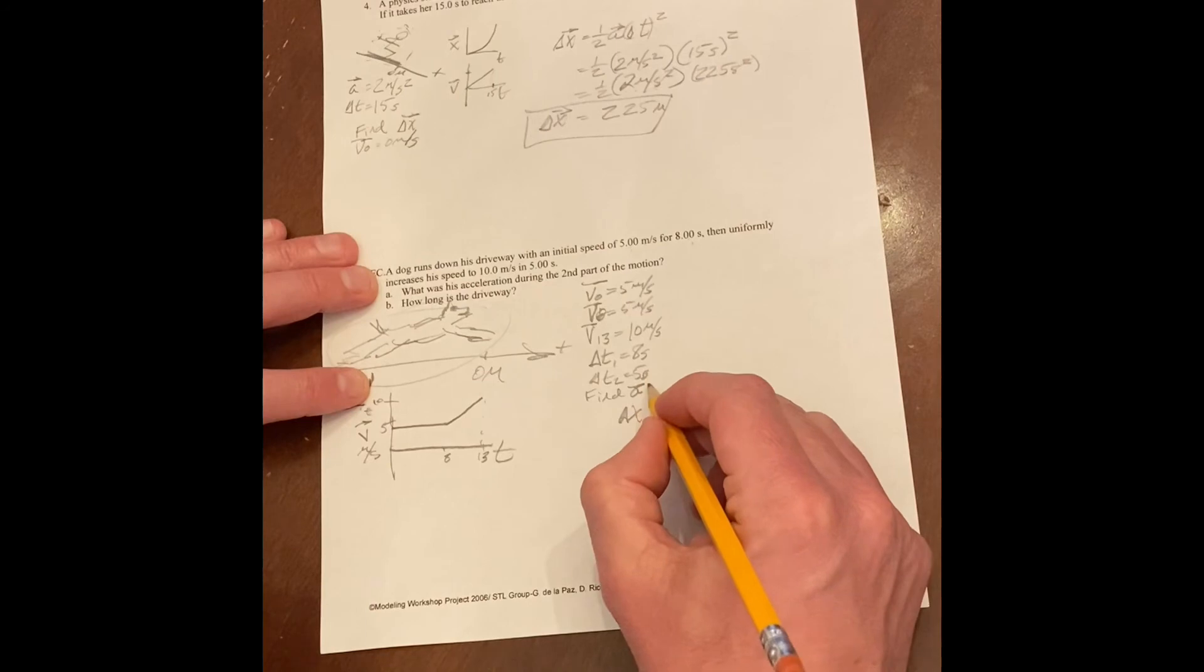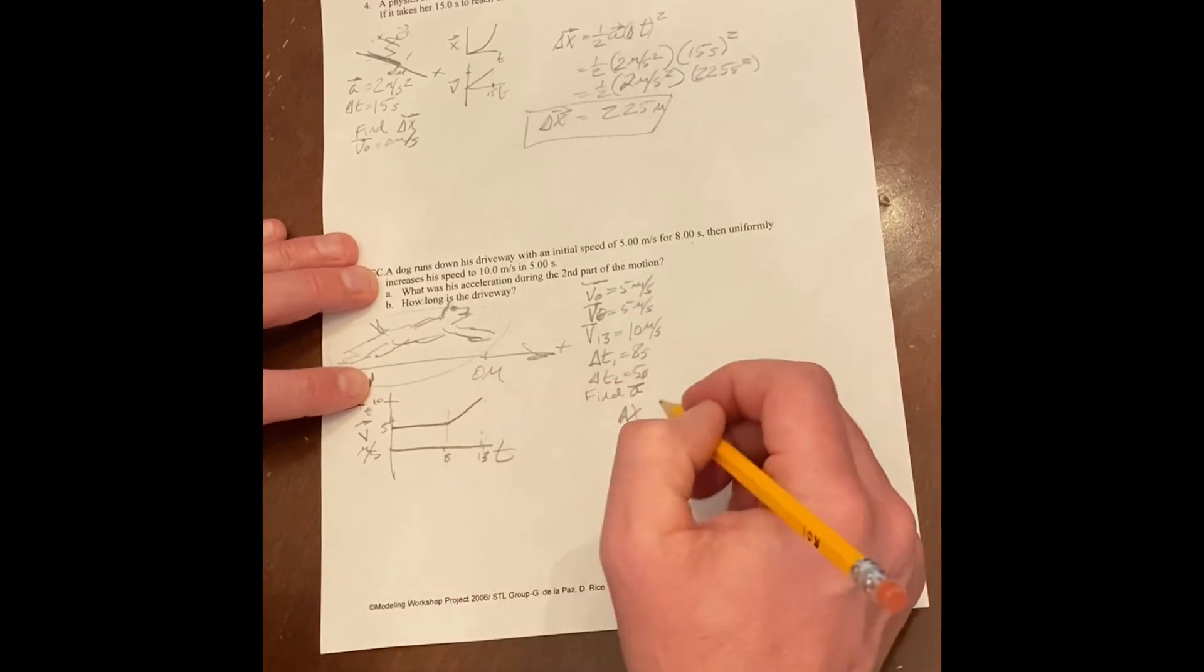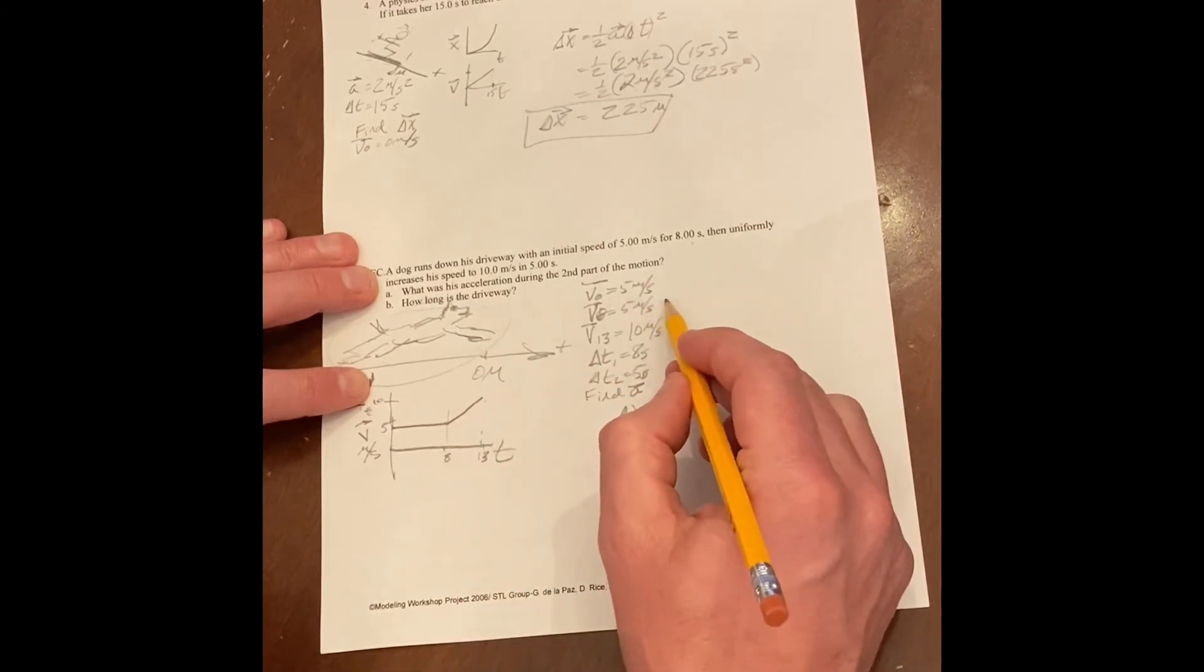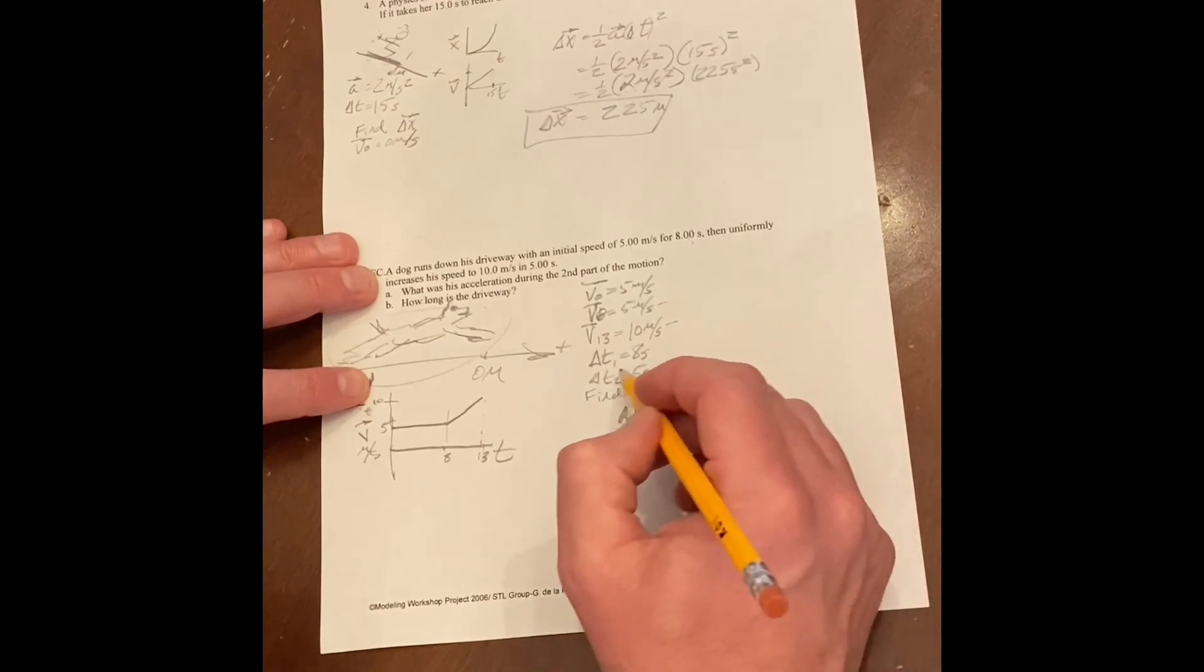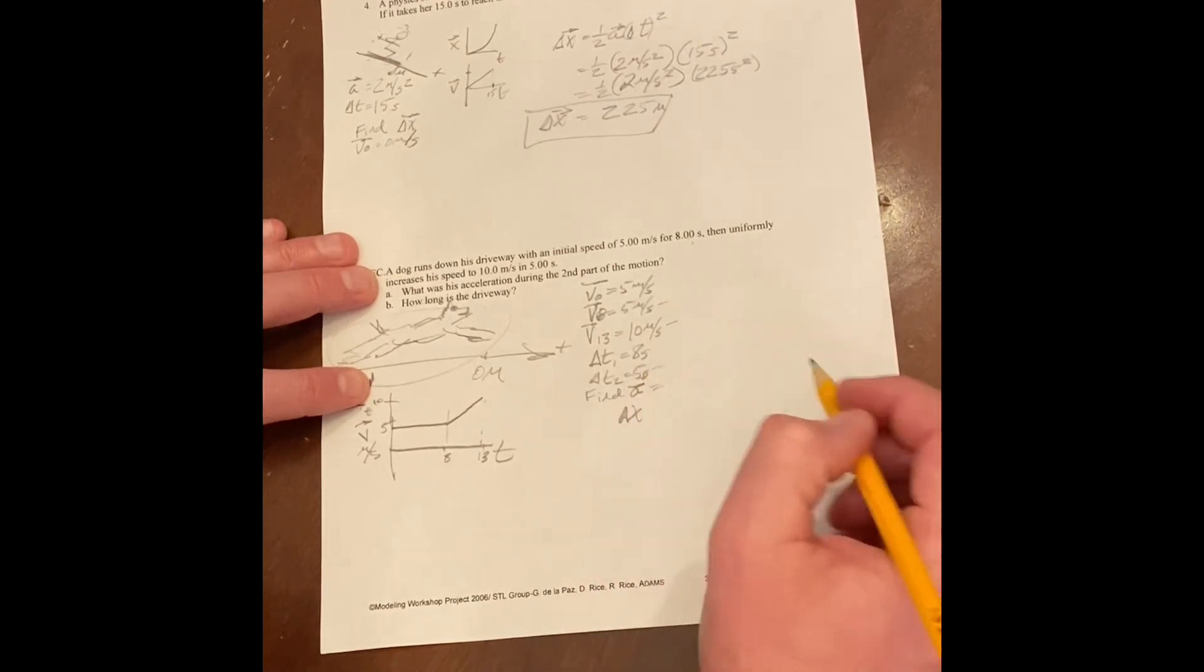Well, the acceleration would only be for phase two, right? And for phase two, we have a starting velocity, a final velocity, and a change in time. So that's how you could find the acceleration.